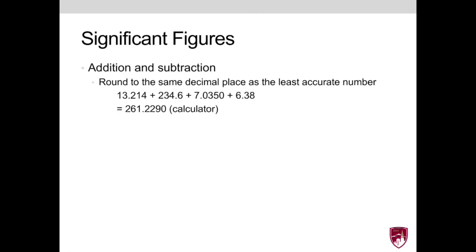And for example, if we have 13.214 plus 234.6 plus 7.0350 plus 6.38, your calculator, or the code that you write, will spit out 261.2290. But for this problem, the correct number of significant digits goes out to the tenth decimal place because that is the least accurate number that's represented in 234.6.